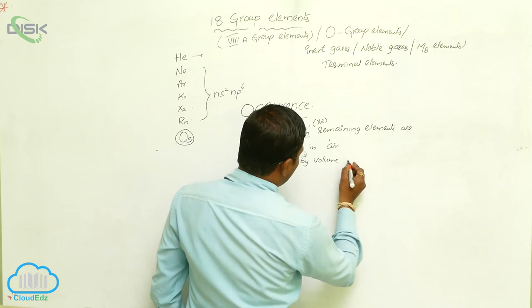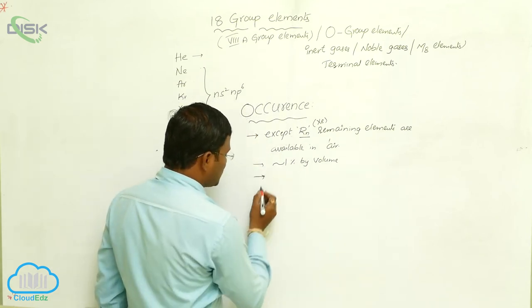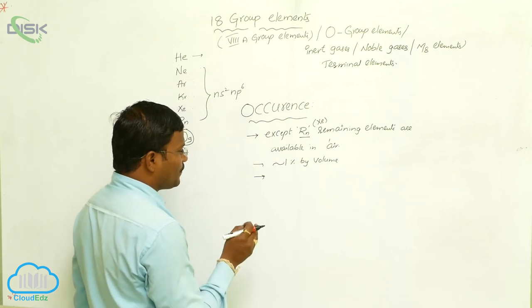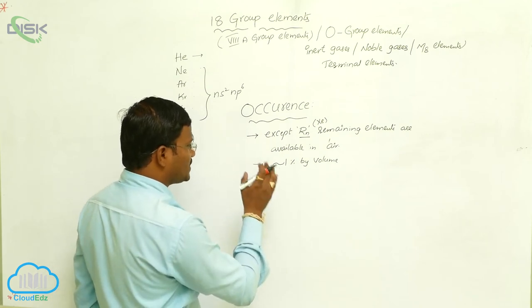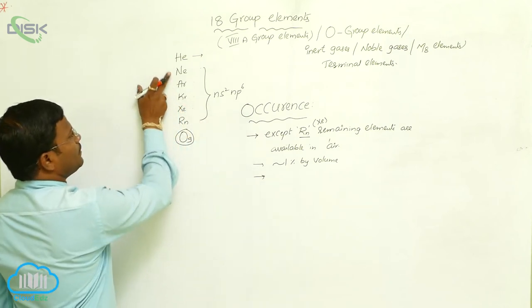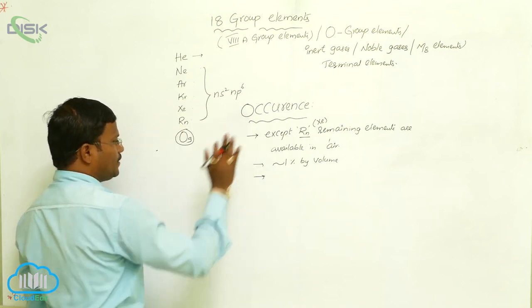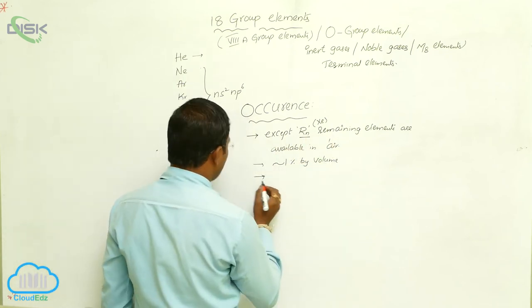Nearly one percentage by volume of air is occupied by inert gases. Among all inert gases, the most percentage of inert gas identified to be present by volume in air is Helium and Argon. They are highly available in air, dry air, that too dry air.